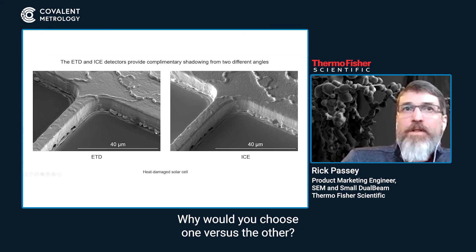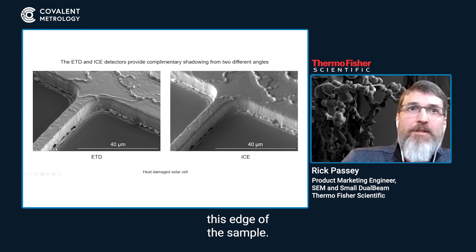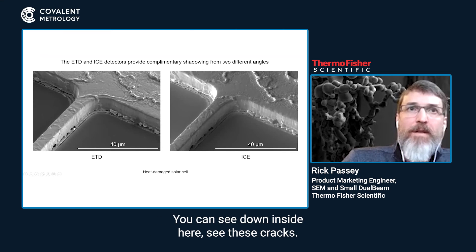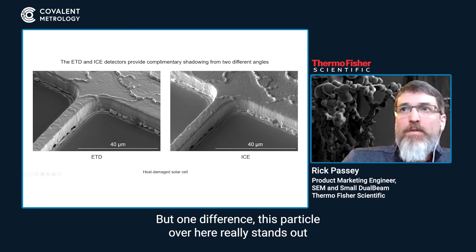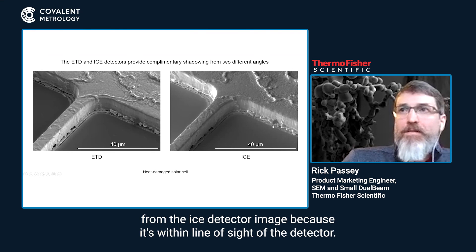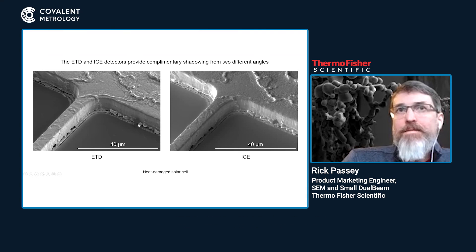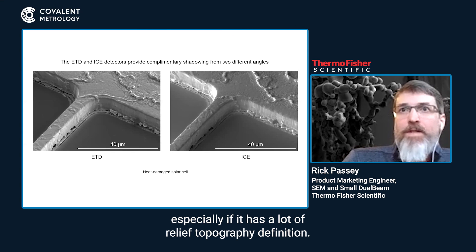Why would you choose one detector versus the other? The Everhart Thornley really allows you to highlight the edge of the sample — you can see that the film is buckling up along here, and you can see down inside these cracks. With the ICE detector, we're in the shadow in that region. But one difference: this particle over here really stands out with the ICE detector because it's within line of sight of the detector, whereas with the ETD the details of that particle are lost in the shadows. So choosing each of these can help you see more of your sample, especially if it has a lot of relief or topography.